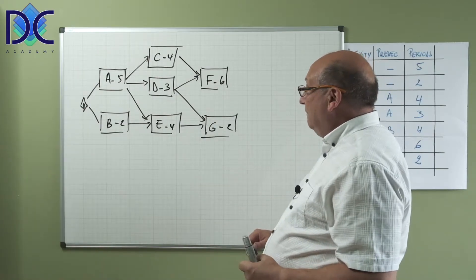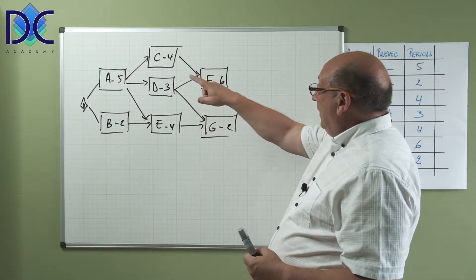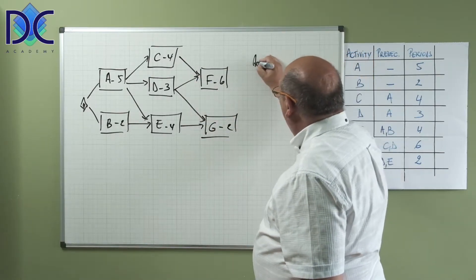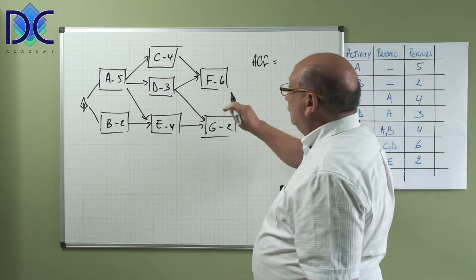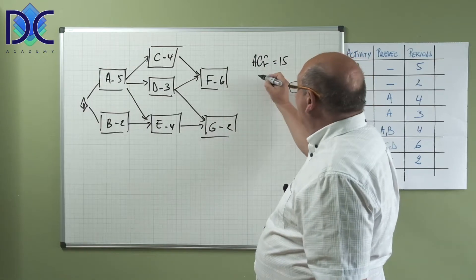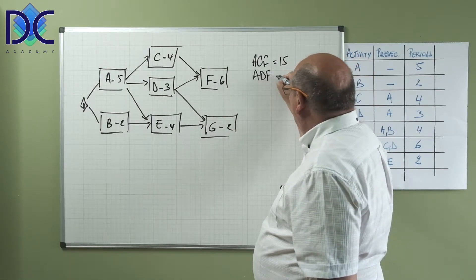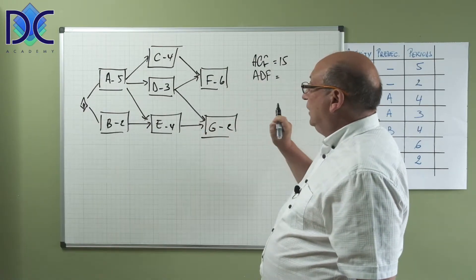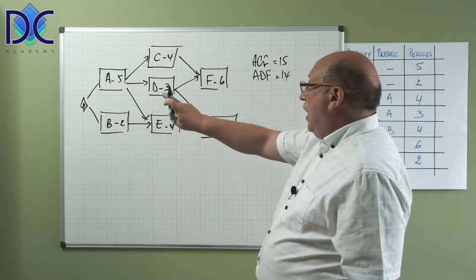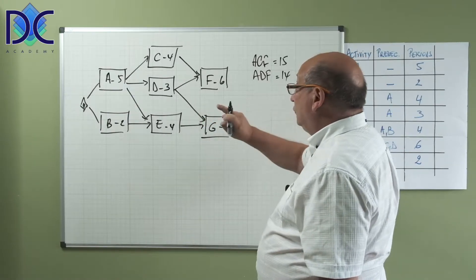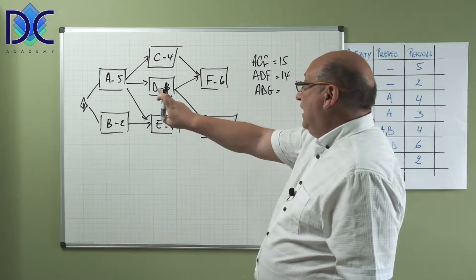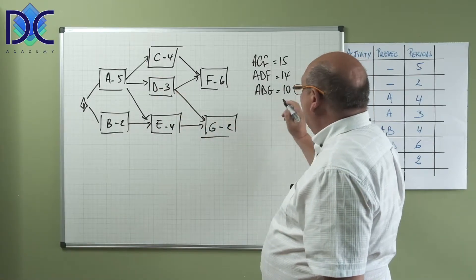Now, what are the paths through the network? We have ACF which has a duration of 5 plus 4 plus 6 is 15. ADF, which is 5 plus 3 plus 6 is 14. ADG, we have 5 plus 3 plus 2 is 10.